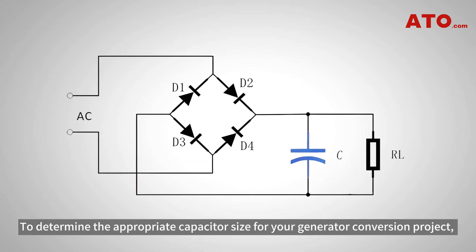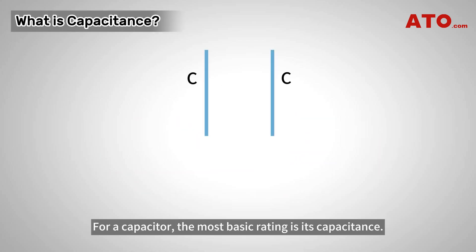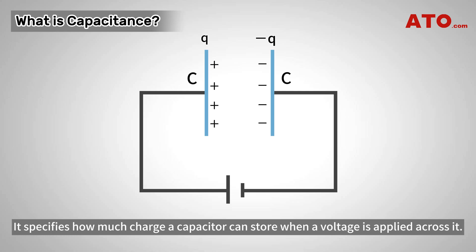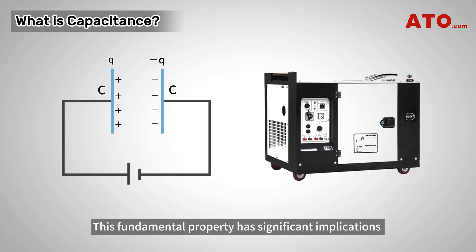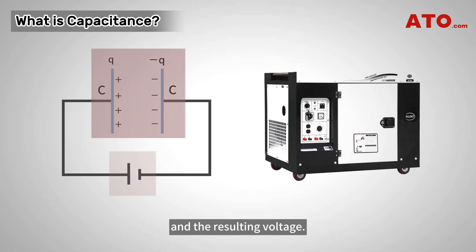To determine the appropriate capacitor size for your generator conversion project, calculate the necessary capacitance value based on the demands of your circuit. For a capacitor, the most basic rating is its capacitance. It specifies how much charge a capacitor can store when a voltage is applied across it. This fundamental property has significant implications for your generator design and functionality because it reflects the quantitative relationship between the stored charge and the resulting voltage.